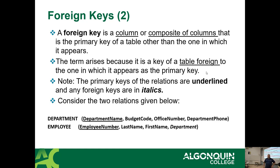It's called a foreign key because the value comes from a foreign source — the value in that field is not native to that table's data; it belongs to something else. In this example, we have a department table with department name, budget code, office number, and department phone, and an employee table with employee number, last name, first name, and a 'department' field as the foreign key whose value comes from the department name.